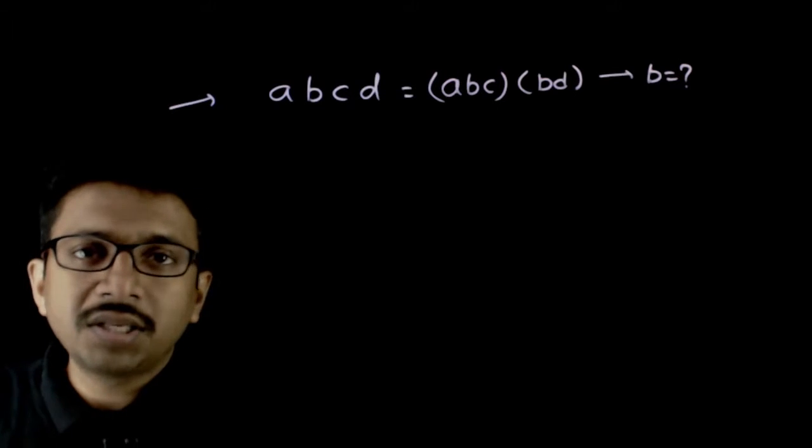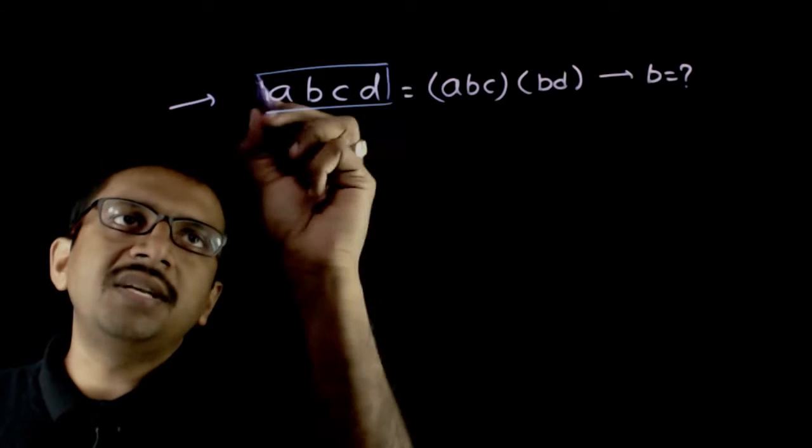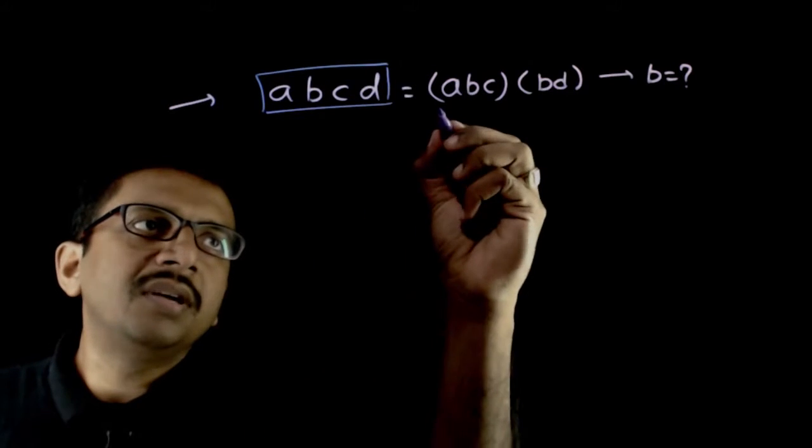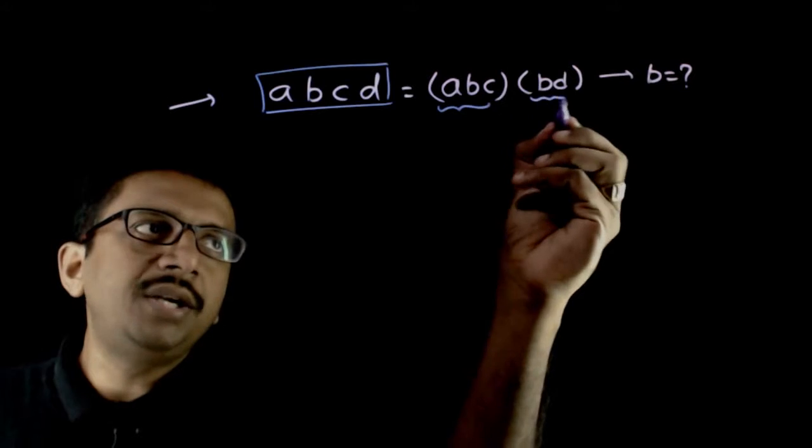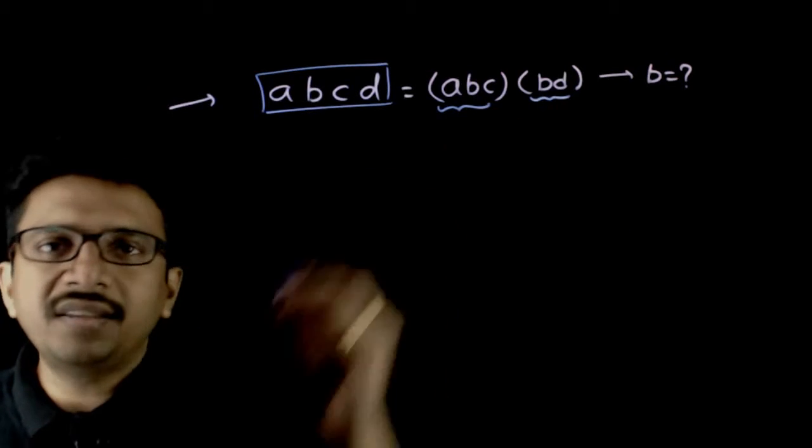Welcome students. In this question you are given that a four-digit number of the form ABCD is equal to a three-digit number of the form ABC times a two-digit number of the form BD. If that is so, you are asked to find the value of B.